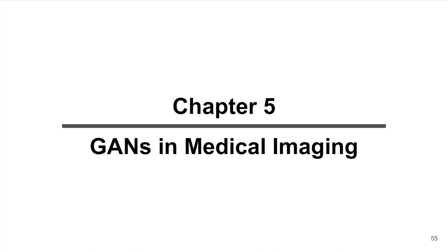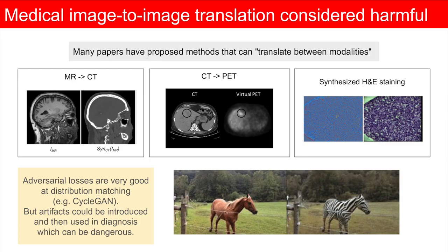In this chapter, we will discuss the use of GANs in medical imaging. I want to start with a warning that image-to-image translation is considered harmful due to the potential for failures having a negative impact on patient outcomes. There are many papers published in the last few years presenting models which transform between modalities, such as from an MRI to a CT, and claim to be able to save a patient from a radiation dose.